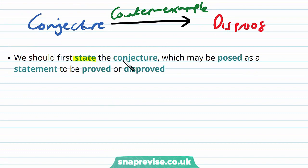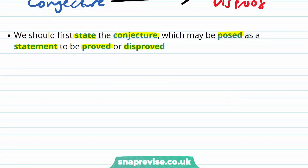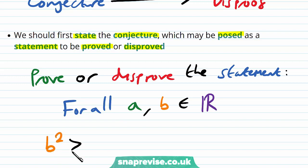We should first state the conjecture, which may be posed as a statement to be proved or disproved. As an example, we may be asked to prove or disprove the following statement: for all a, b in the real numbers, if b squared is strictly greater than a squared, then this implies that b is strictly greater than a.